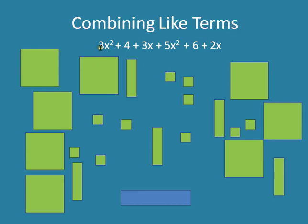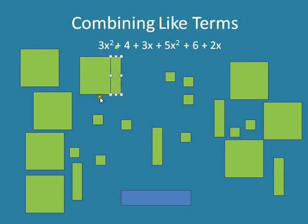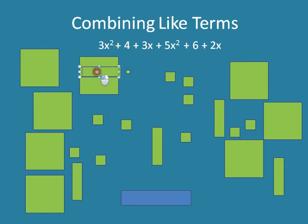So we have this big long expression here: 3x squared plus 4 plus 3x plus 5x squared plus 6 plus 2x. We know from our blocks that these little ones are just ones — they're constants, each worth just one, no x after it. Each of these rectangles is an x. And each of these big squares is an x squared, because the height is x and the width is x — it's x times x, it's x squared.